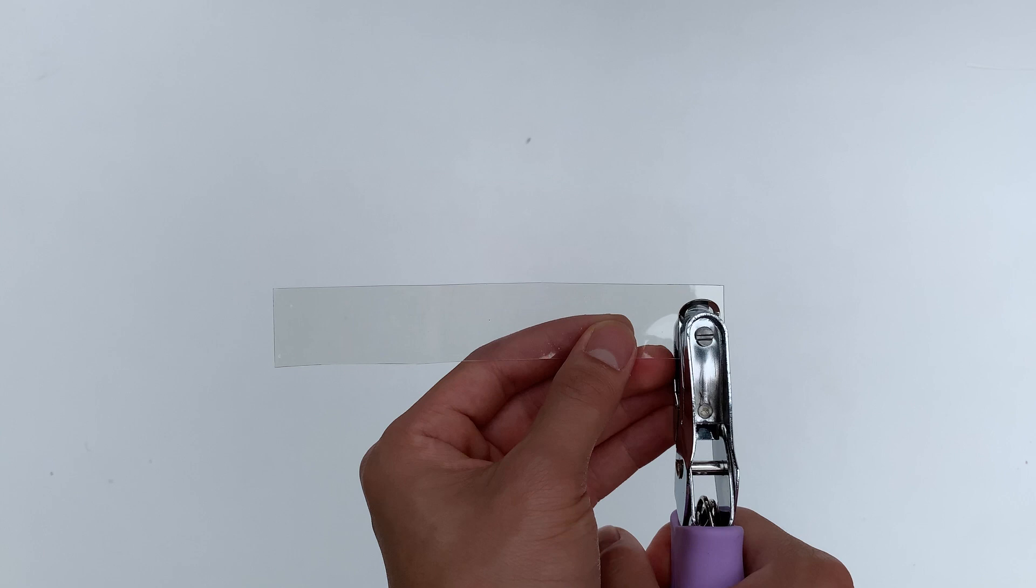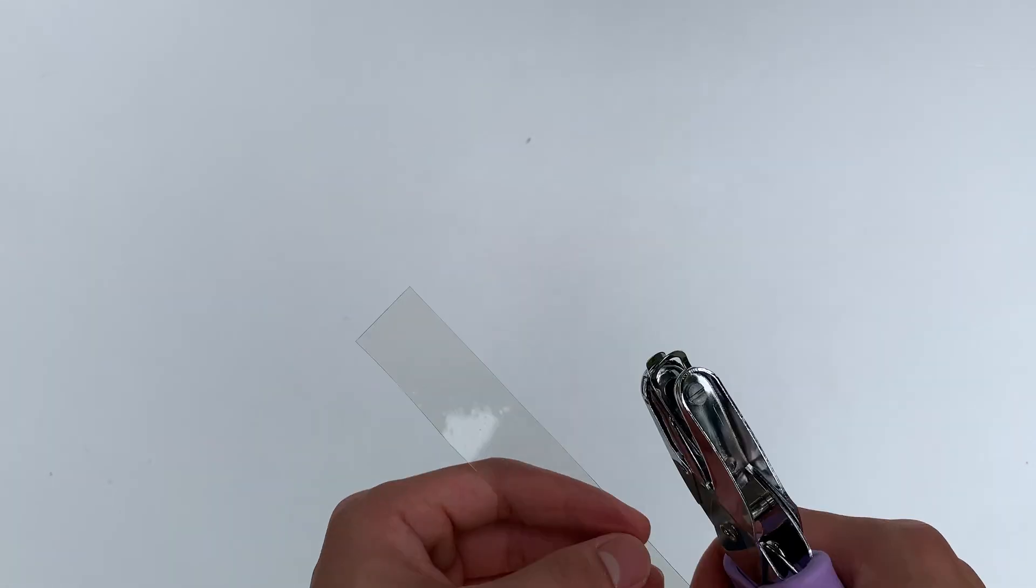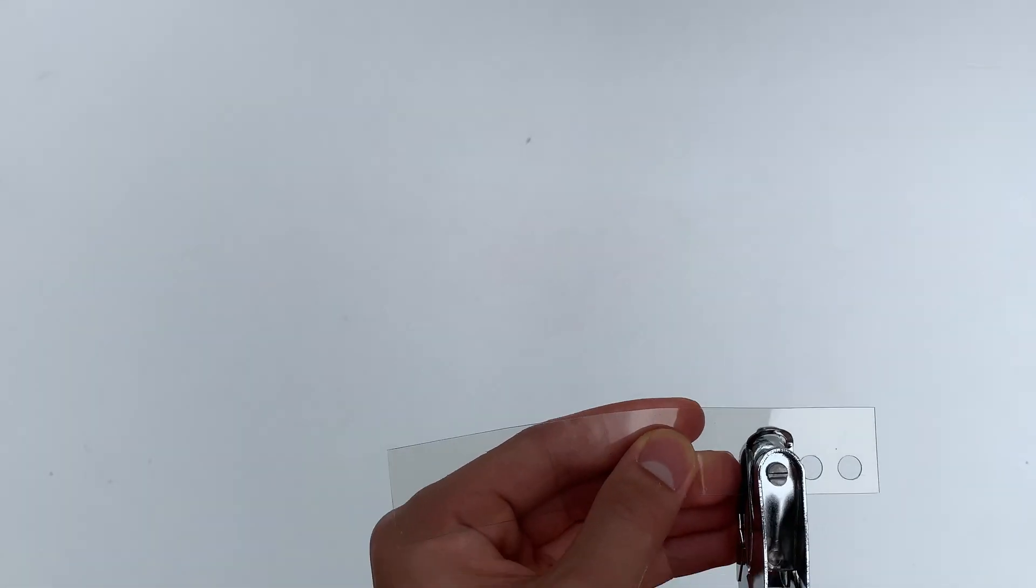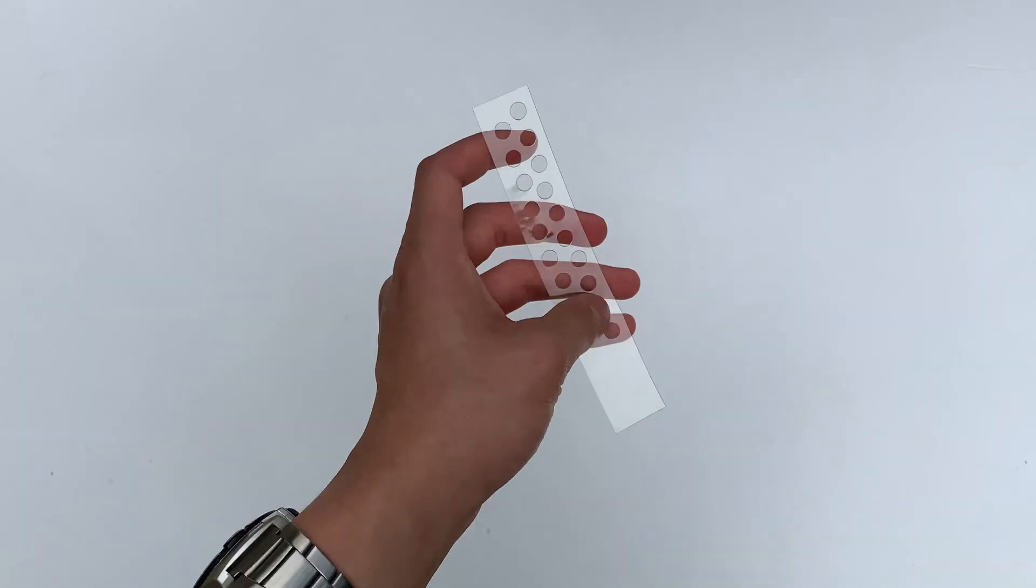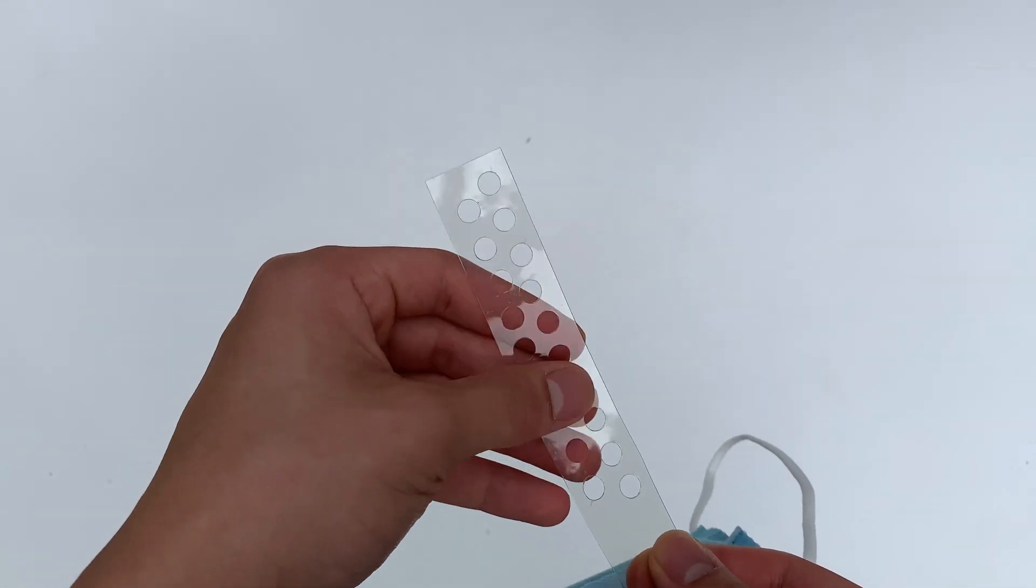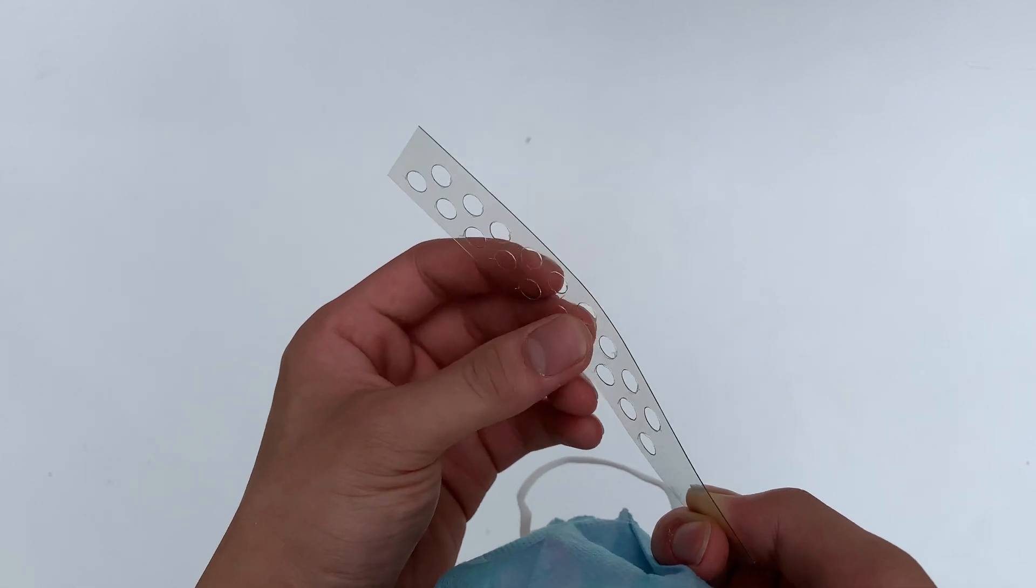You want to make sure to punch holes on the same side of the mask. Hole punches will make one side of the hole rough and the other side smooth. This way, one entire side of the plastic strip will be smooth and comfortable when you wear the mask.